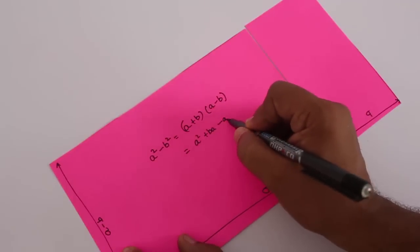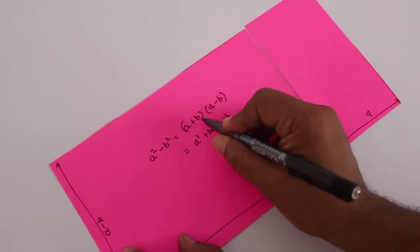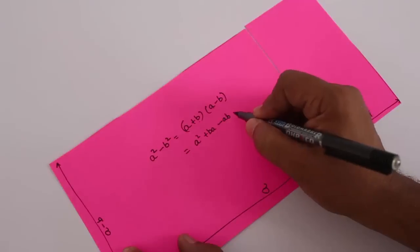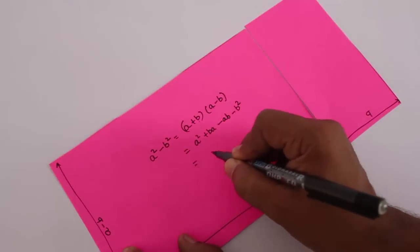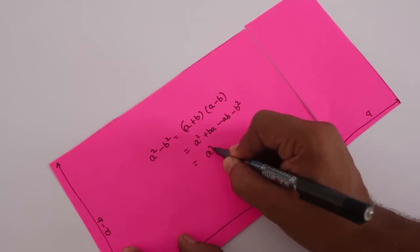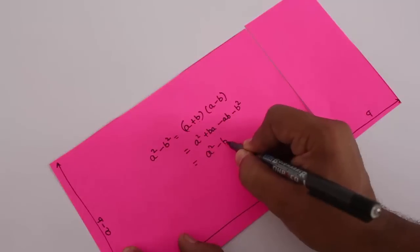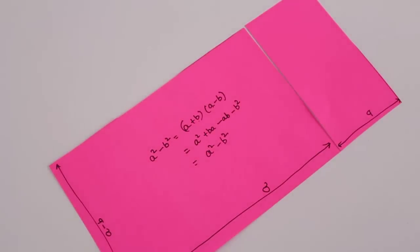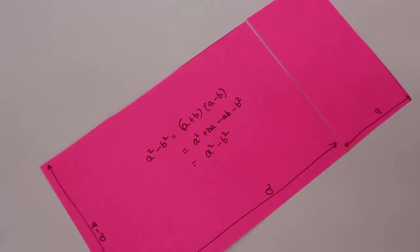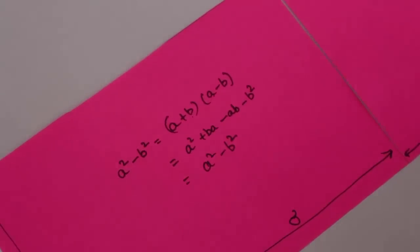Multiplying a plus b times a minus b: this will be a squared, then a times b gives ab, then b times a gives ba, and minus b squared. The ab and ba cancel out, leaving a squared minus b squared.